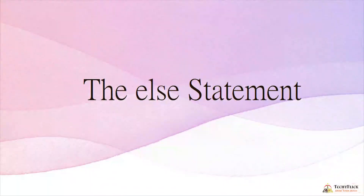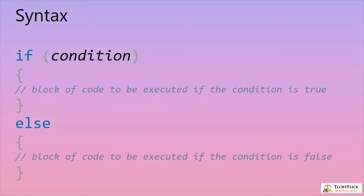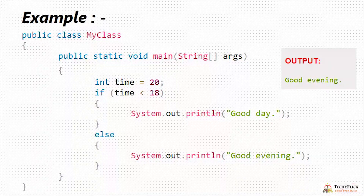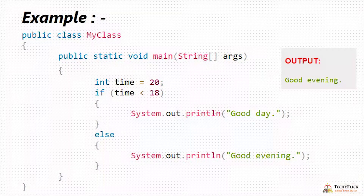The else statement. Syntax: if(condition) — same as before — and else. If the condition is false, the else block of code executes. For example, time is 20. The condition checks if time is less than 18. Since 20 is not less than 18, the condition is false, so the else block executes and the output is 'good evening'.